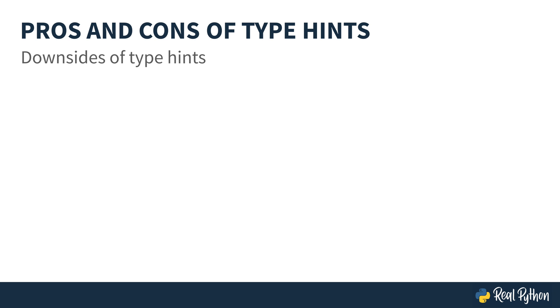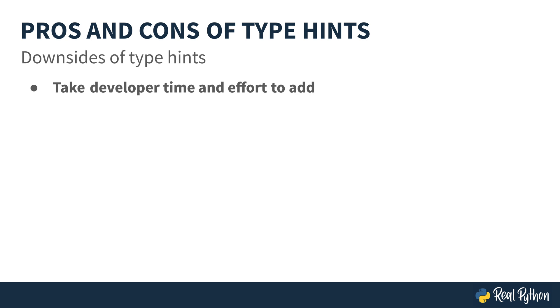So what are some of the downsides of type hints? Well, it's going to take you as a developer more time and effort to add these. In the end, it probably will pay off in spending less time debugging, but you will be spending more time entering in your code.